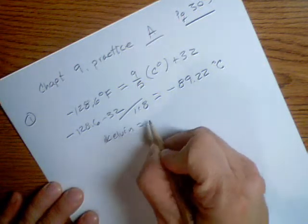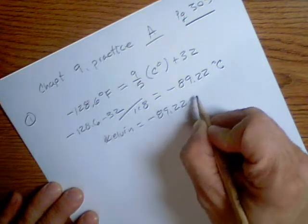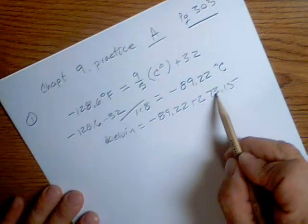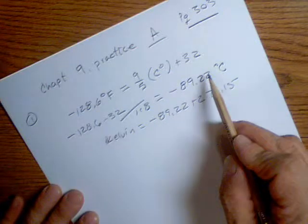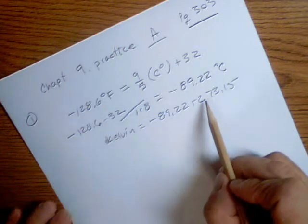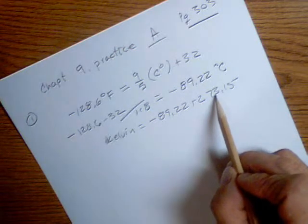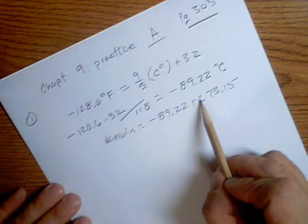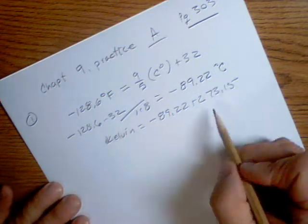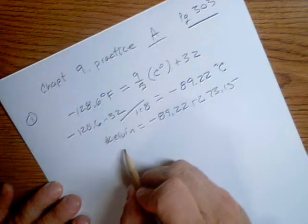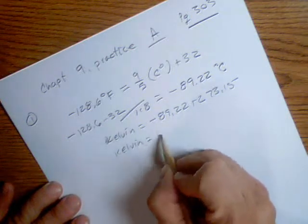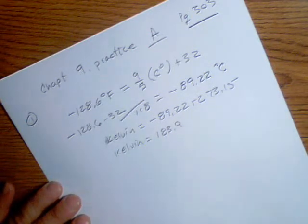Kelvin equals negative 89.22 plus 273.15. You just add 273.15 to the Celsius because there's a one-to-one relationship — 273 is zero in Celsius. So all you have to do is add it and then you get Kelvin. In Kelvin, that is 183.9.